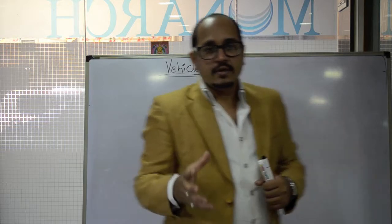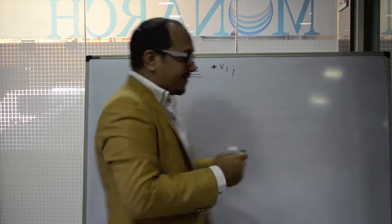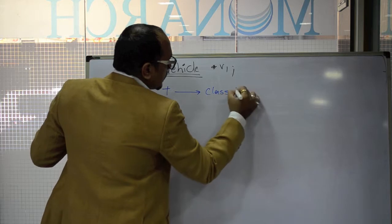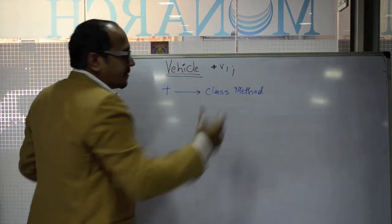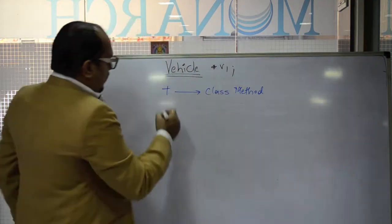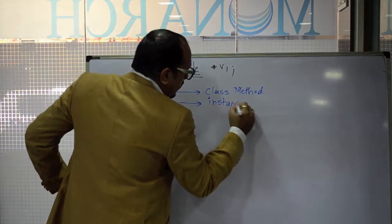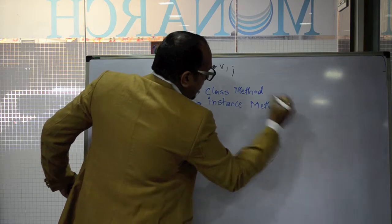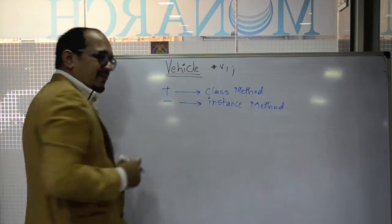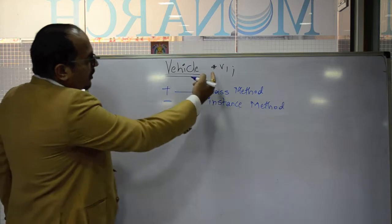Since a class object is at the class level, it has behavior. All methods that are executed by the class object are denoted with a plus sign — indicating it's a class method, similar to a static method. Methods with a minus sign are called instance methods. So if you have a static method, you denote it with a plus sign, and instance methods are denoted with a minus sign.